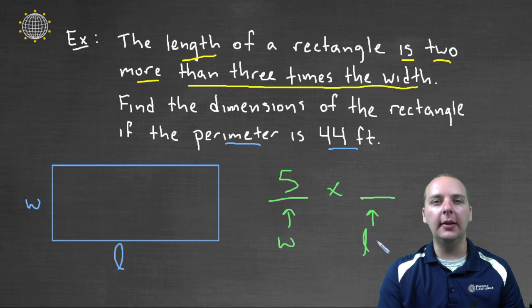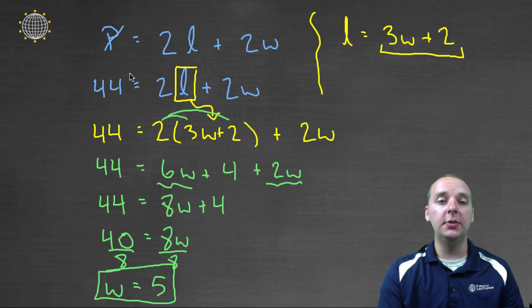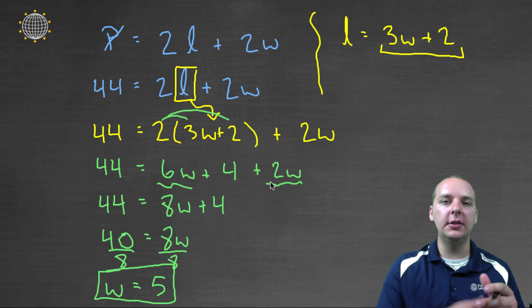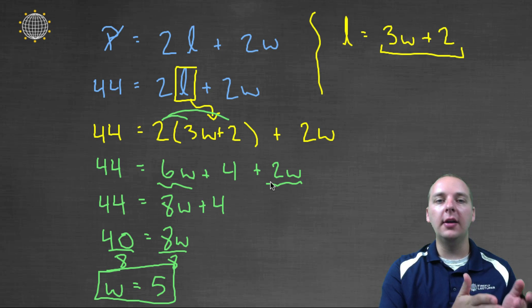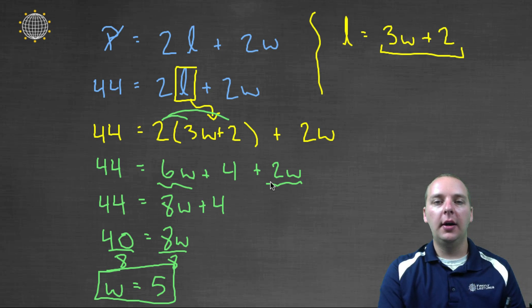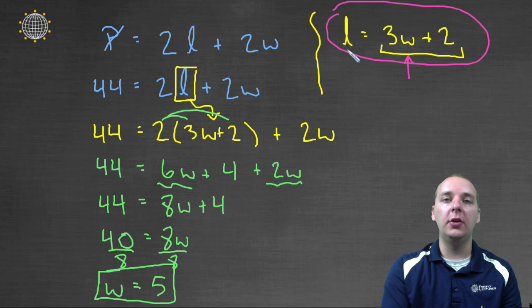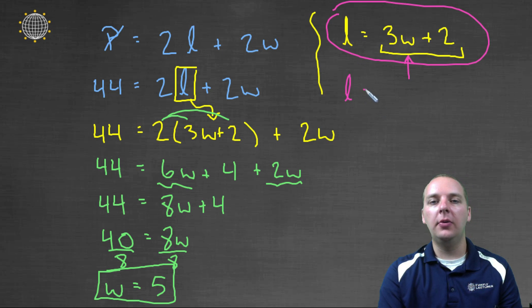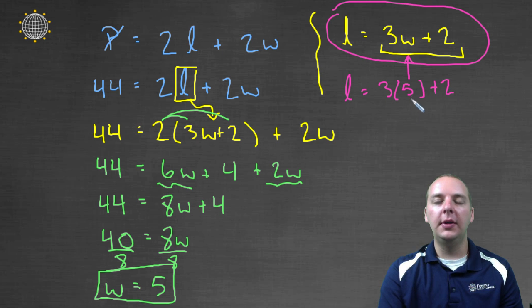So how do we find the length if all we know currently is the width? Well you can use any previous equation, because all these equations are true, and so look on the screen here, do you see any equation that would give us an L if we plugged in a W? Well I see a couple, the main one I'm looking at is this one up here. Because notice if you plug in a W, it will provide you with the L that goes with it. So L would be three times five plus two, three times five is fifteen, fifteen and two makes seventeen. So the length would be seventeen.